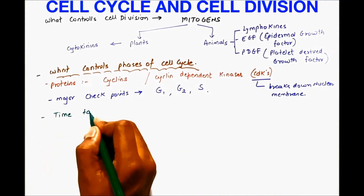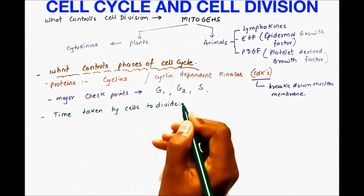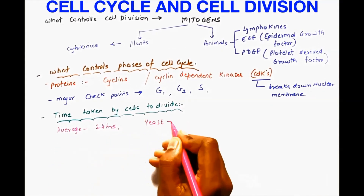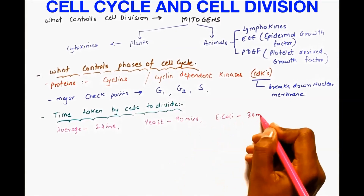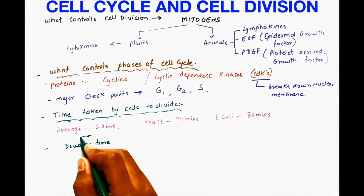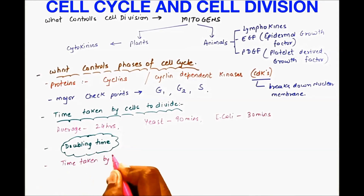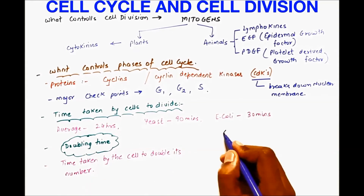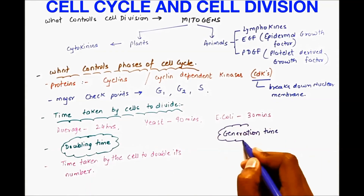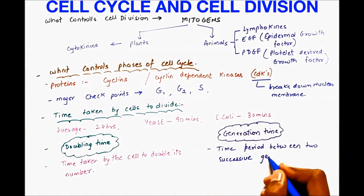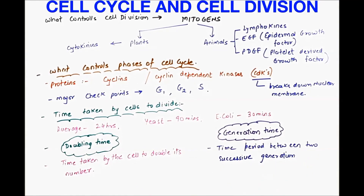The average time taken by cells to divide is 24 hours. For yeast it is 90 minutes, and for E. coli it is 30 minutes. Doubling time is the time taken by a cell to double its number. Generation time is the time period between two successive generations. Doubling time and generation time remain the same.